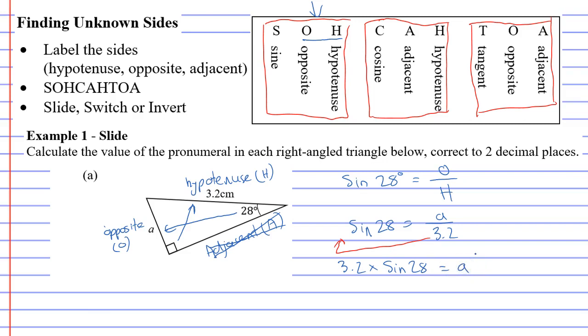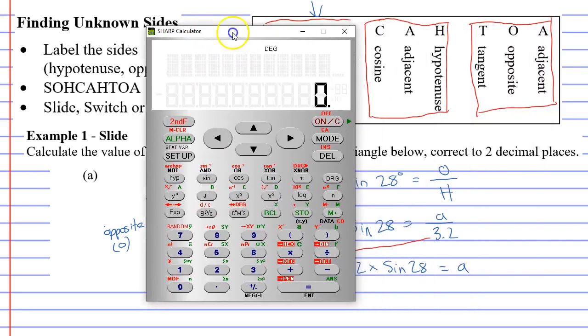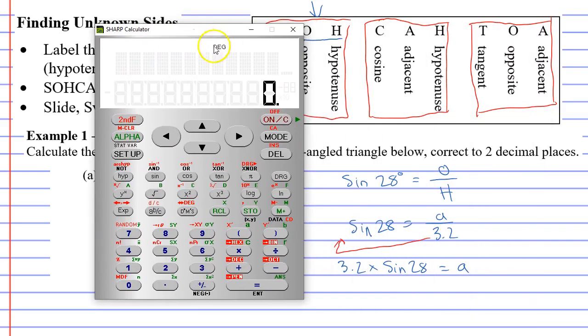Now we have the information we need to find A. So we'll bring up our calculator. Make sure your calculator has DEG, which stands for degrees. Sometimes it's just got the letter D. But if you don't have this, it will actually give you the wrong answer. Anyway, we're going to go 3.2 times sine 28.